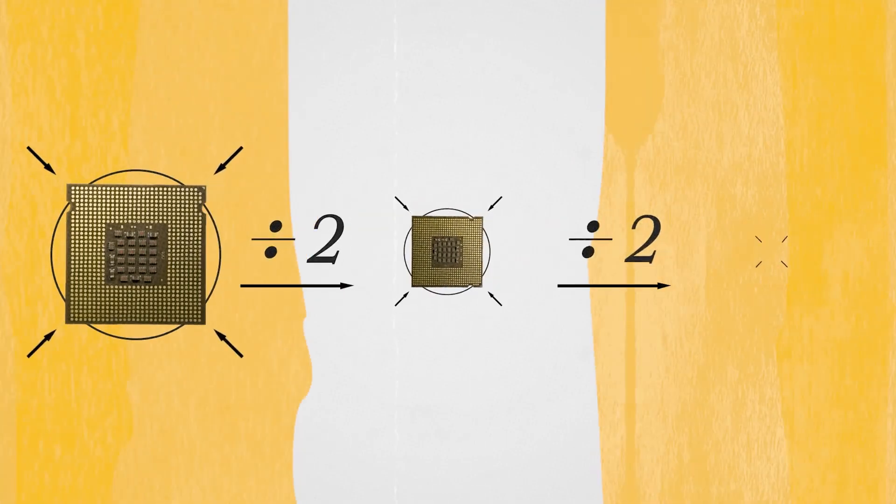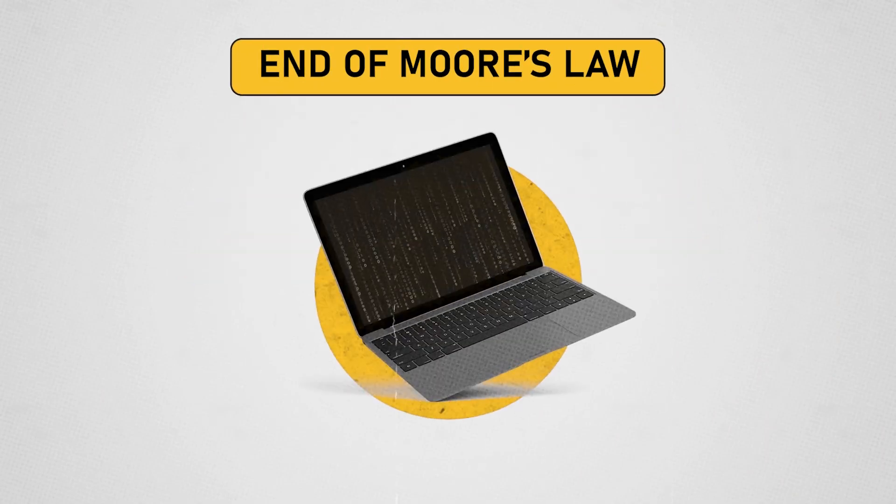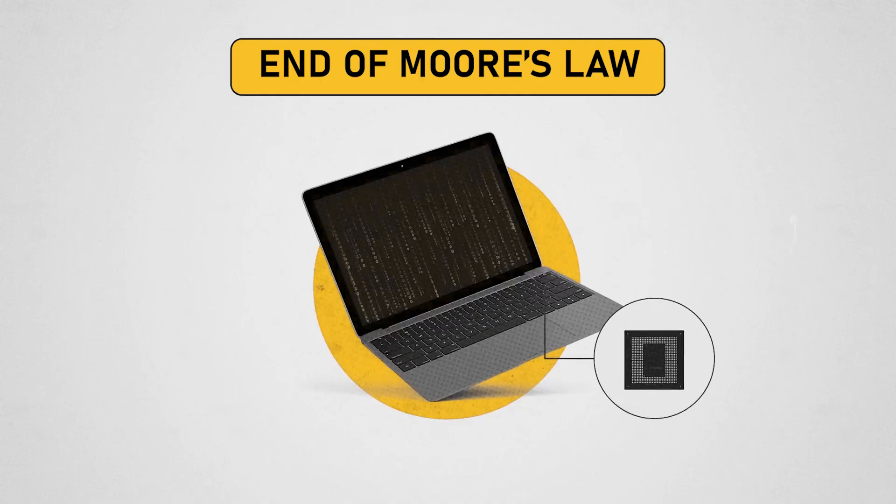In other words, it is becoming increasingly difficult to halve the size of a transistor. And soon it will be impossible. We are living at the end of Moore's Law, at least for traditional computers with electronic transistors.